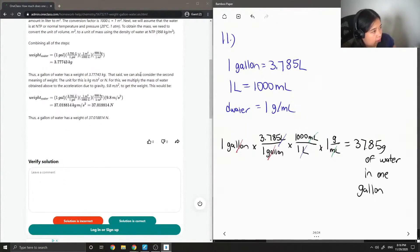That said, we can also consider the second meaning of weight. The unit for this is kilograms times meters over seconds squared, or Newtons. For this, we multiply the mass of water obtained above to the acceleration due to gravity, which is 9.8 meters per second squared, to get the weight.